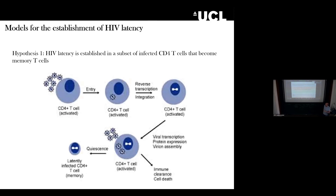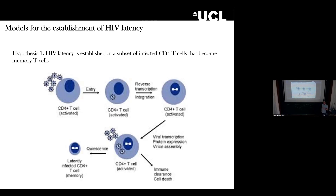Are there parallels with HIV latency? HIV infects T cells — an activated T cell will support HIV replication. In contrast, HIV infecting a resting T cell may go into a latent infection, i.e., it will not go lytic. It's a similar idea: it's the cellular environment that's dictating whether the virus goes latent. It's not the virus making that decision — it's the host environment.